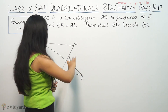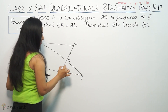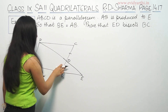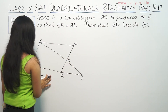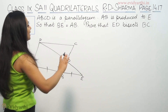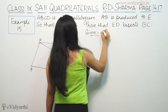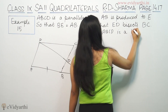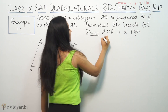This ED bisects BC and we have to prove that. That means we have to prove that OC is equal to OB. We have to prove that, and BE is equal to AB. This is a parallelogram. So first of all, ABCD is a parallelogram and BE is equal to AB.